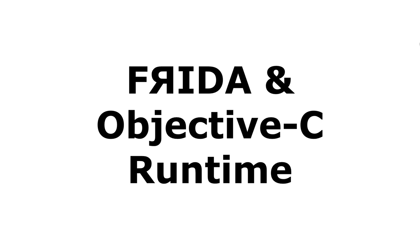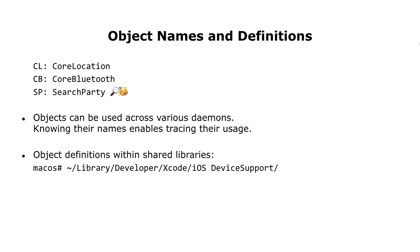The underlying technology for these hooks is Frida, which can instrument the Objective-C runtime. For instrumenting Objective-C, only a few details have to be known. It's not required to understand most Objective-C features since existing code is modified. Instead, it's important to know where Objective-C is used and what the naming conventions are. Everything I'm instrumenting in the following is part of Core Location, Core Bluetooth, and Search Party.